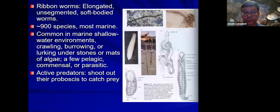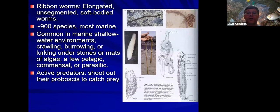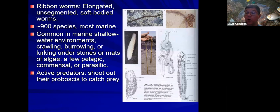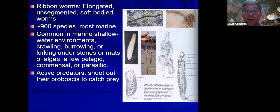Ribbon worms are relatively flat worms, as the name suggests. Most of them live in the ocean, a few are freshwater or land, and they are typically predators. They're able to very rapidly shoot out a proboscis and use that for grabbing their prey; some of them have a spine, sometimes with poison, to help in capturing prey. The very longest worm known is a type of ribbon worm, sometimes called the bootlace worm — Lineus longissimus, an appropriate scientific name. They're kind of stretchy so that makes it tricky to measure exactly, but some of these can be more than 100 feet long — very, very long worms, and in terms of length, some of the very biggest animals.